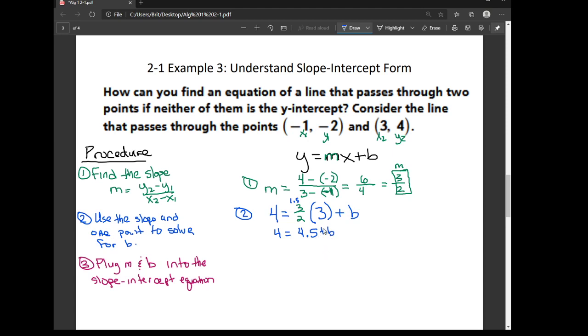And then to get b alone, or to isolate b, I'm going to go ahead and subtract the 4.5 to the other side of the equation. So I get that negative 0.5 is equal to my b value. So we found m, we found b.